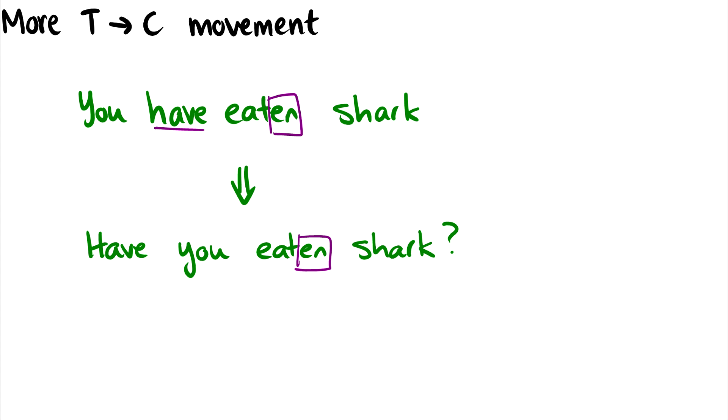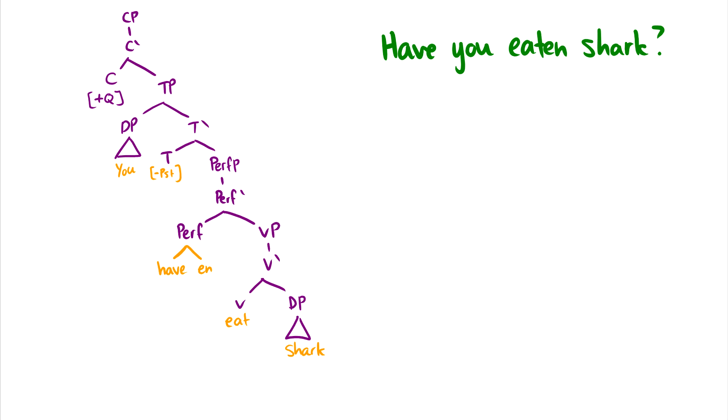And again, all we see is some inversion. But this isn't in T, right? Or is it? Well, if we remember from the last video, if we have our perfect phrase here, this EN morphology moves down to 'eat.' And then, if T is empty, 'have' moves up into T. And because 'have' has moved up to T, it can then move once again, up to C.